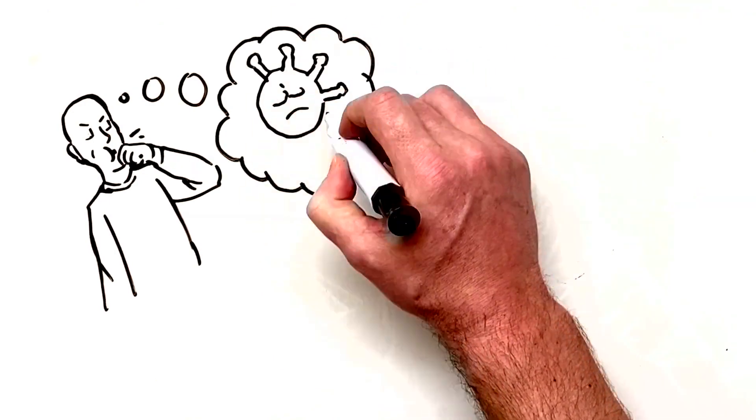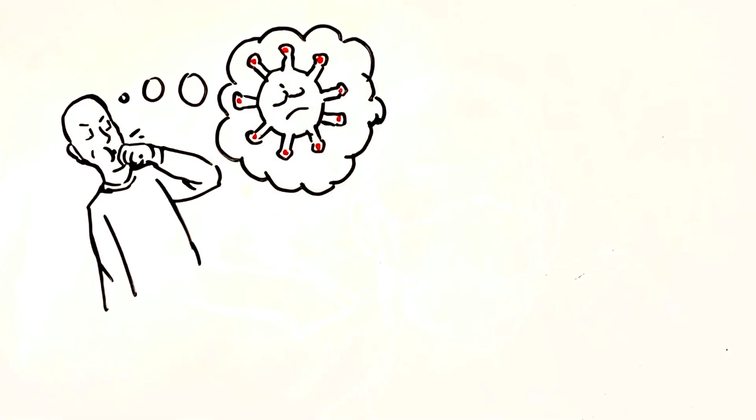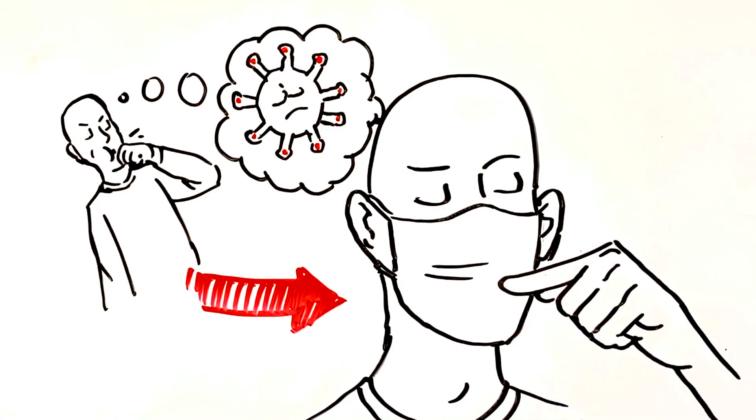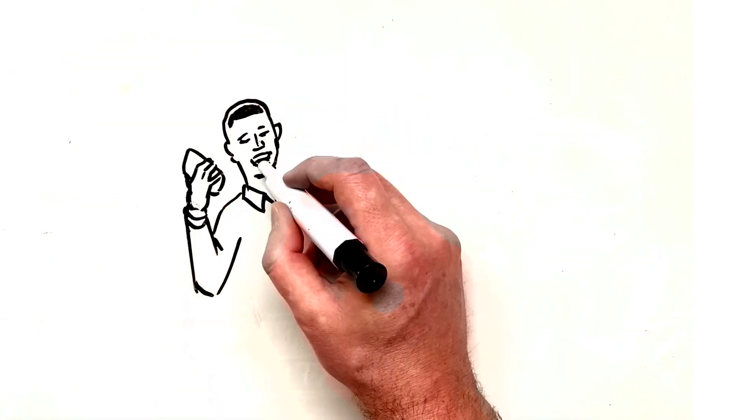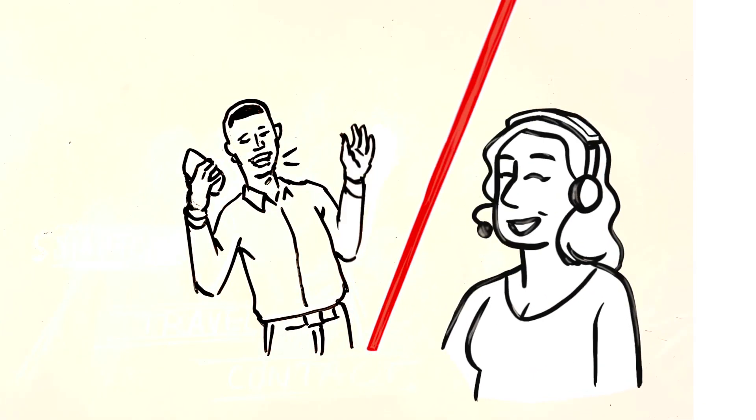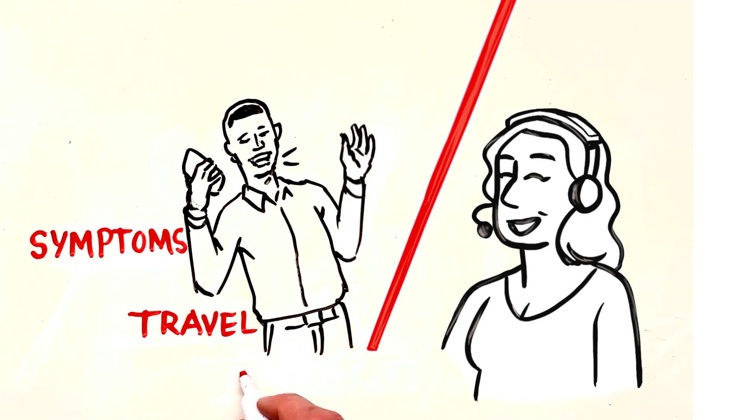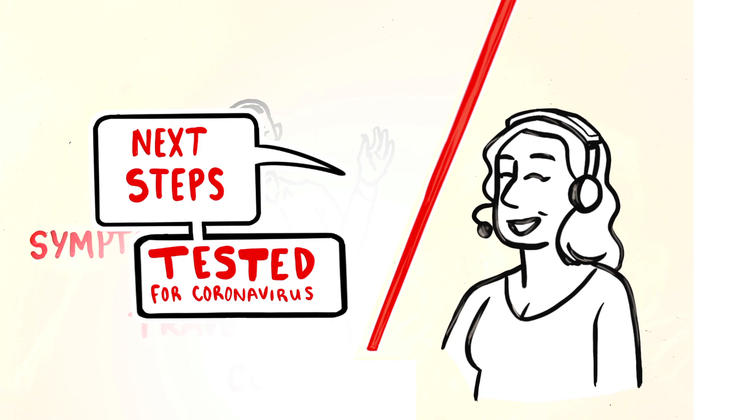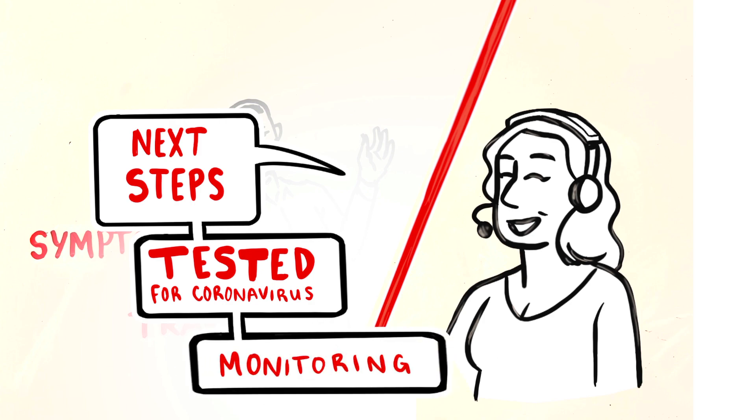If you suspect you have the coronavirus, what should you do? You should seek medical attention and wear a face mask to protect those around you. Call ahead to your healthcare provider to let them know your symptoms, recent travel, and any contact you may have had with an infected person. The provider will then make a determination about next steps, which may include being tested for the coronavirus and further monitoring your symptoms.